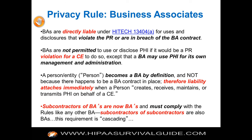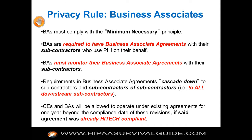BAs are required to have business associate agreements with their subs. BAs must now monitor the agreement — not the operations, because nobody can monitor someone else's operations 24/7 — but if you know that your covered entity or your subcontractor business associate is in material breach, you can't look the other way. Requirements in the business associate agreements cascade down to subcontractors recursively. It's probably three or four deep, but it could go deeper depending on what's being done.